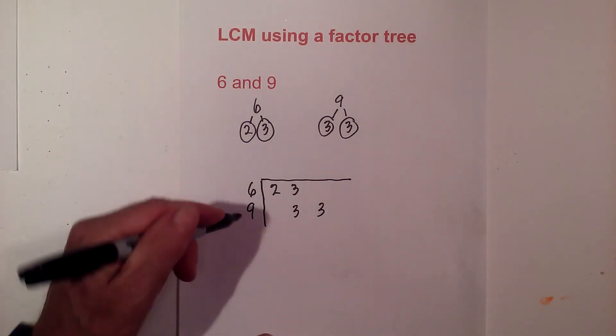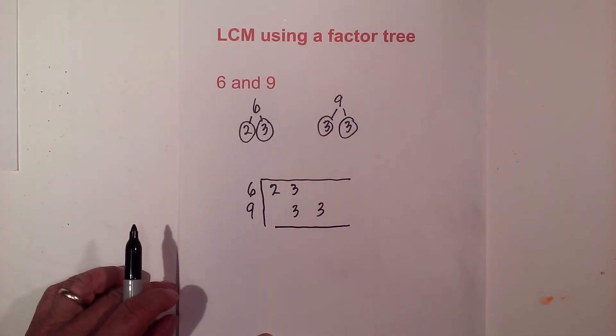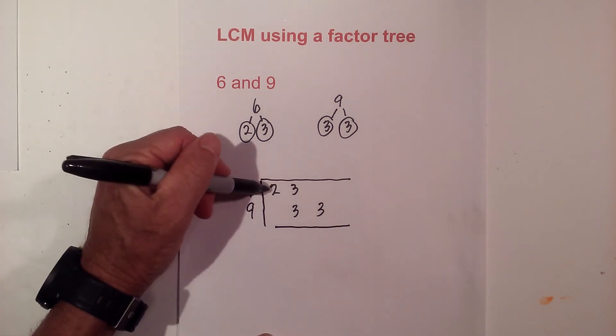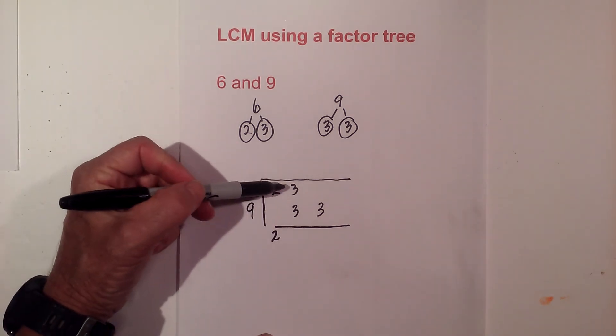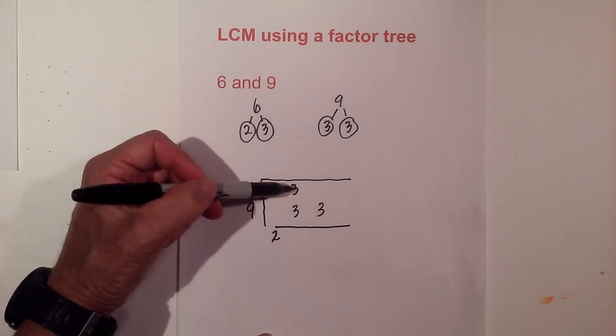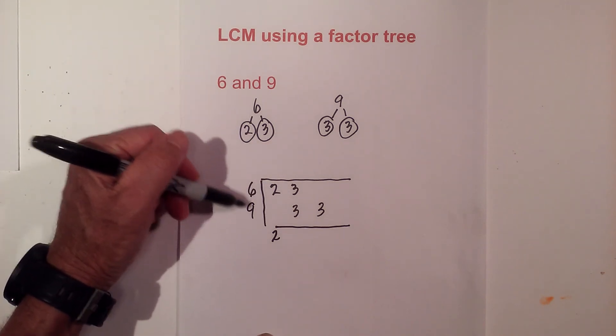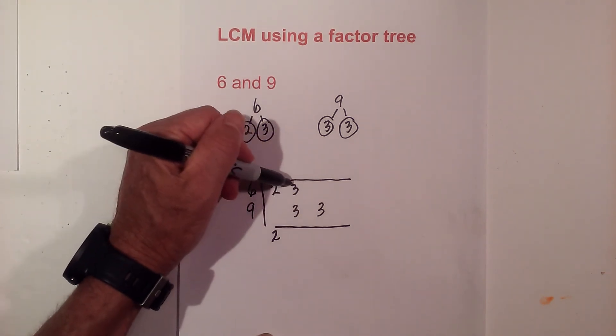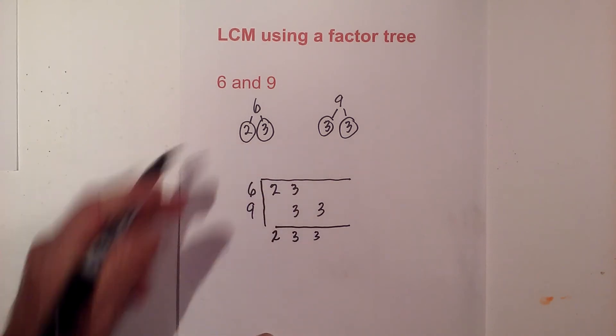Now what I do for the least common multiple LCM I bring the prime numbers down. So here's a 2 however I follow this rule. If I have 2 in this vertical column then I only bring one number down because we are only finding the least common multiple of 2 numbers. So I bring down one 3 and then I bring down this 3 because there is only one.